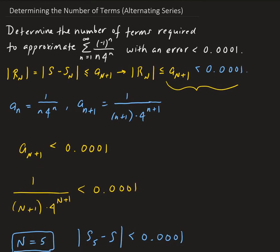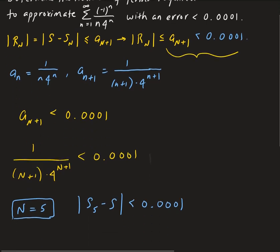The smaller the error, the more terms we need. This is going to become important later because we're going to integrate a function using the series with a certain degree of tolerance. We're going to have to use the same idea, using the residual term with the alternating series to determine how many terms are necessary to achieve an error. We want to come up with a finite series to approximate our integral, and I'll do an example of the integral later.